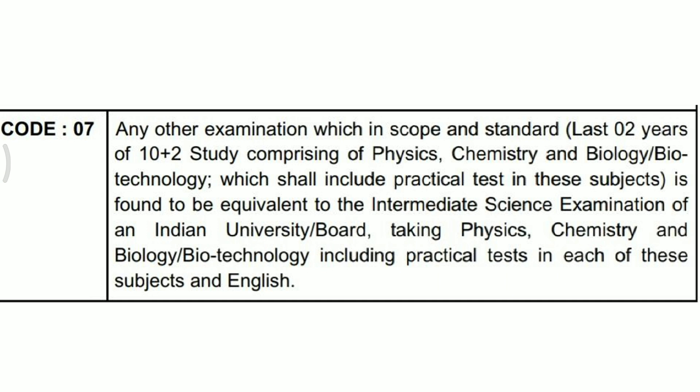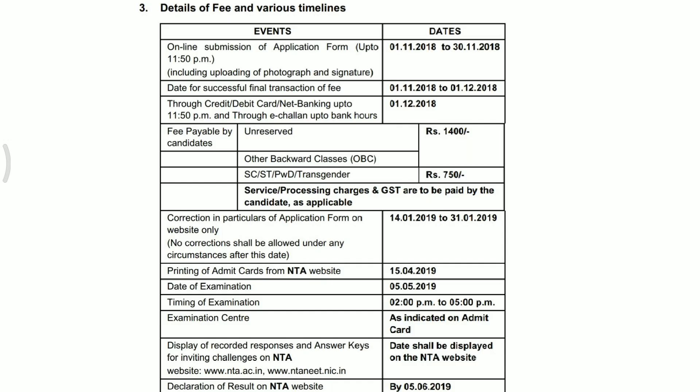Code 07 उन students के लिए है जो international board को relate करते हैं — like foreign countries में जो हैं वो नीट का examination देना चाहते हैं तो उनको भरना होगा Code 07। अगर आप Code 1 से लेकर 6 तक किसी में नहीं आते हैं तो that's very sure कि आप Code 07 में आने वाले हैं, जो बच्चे foreign countries से नीट examination देंगे।